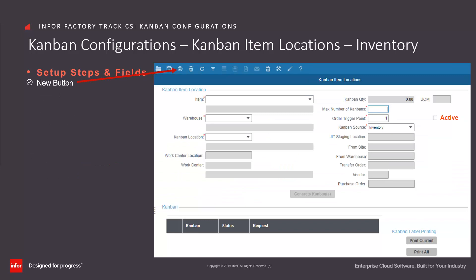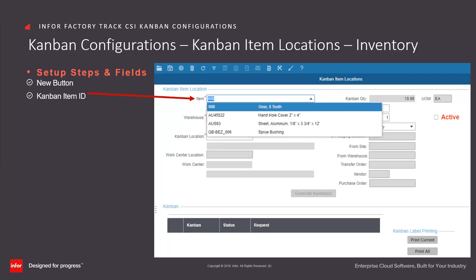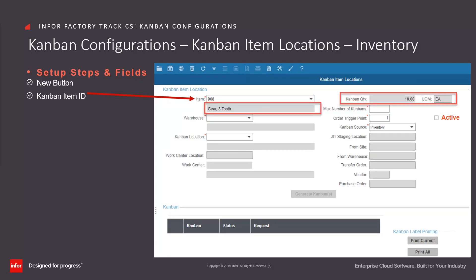Kanban items can be set up for replenishment at multiple locations, so it is necessary to define a Kanban item location record for each replenishment. Open the Kanban Item Locations form and click the New button. Enter or select from drop-down the Kanban item. Once selected, the description, the default Kanban quantity, and the unit of measure associated with the Kanban item are displayed.